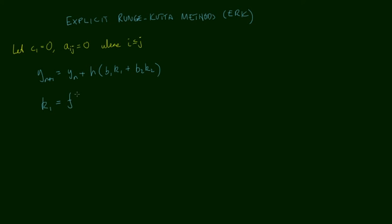But this time with k1, ordinarily we had f(t_n + c1*h), well c1 in this case is 0, so we just got f(t_n). The second argument was y_n + h times a11 and a12. Well a11 and a12 will both be 0 because in this case i is 1 and j is 1 or 2. So that means we just got y_n. Our first stage value is f(t_n, y_n).